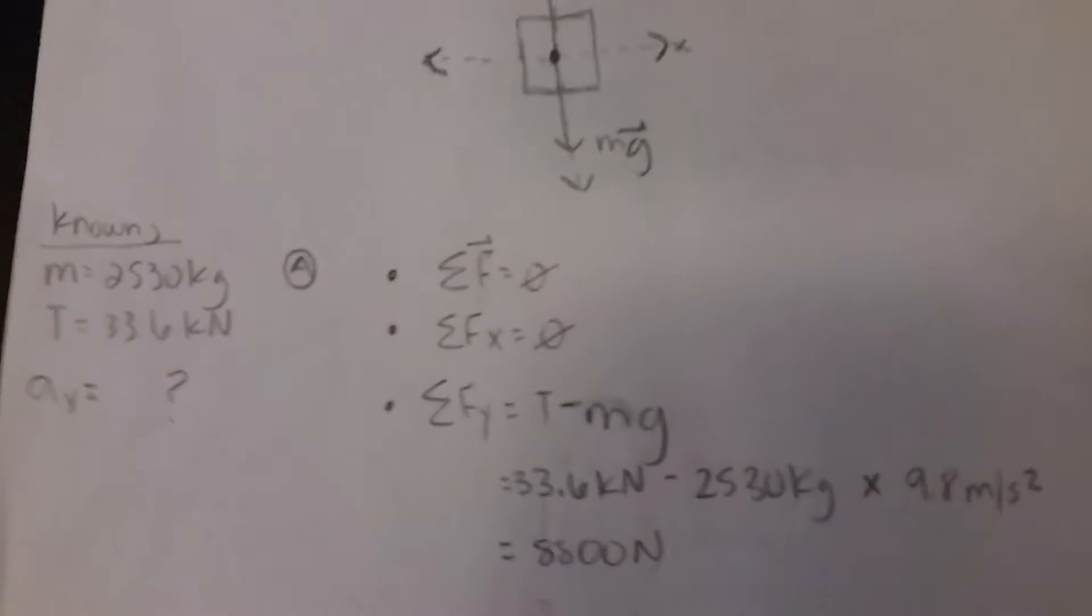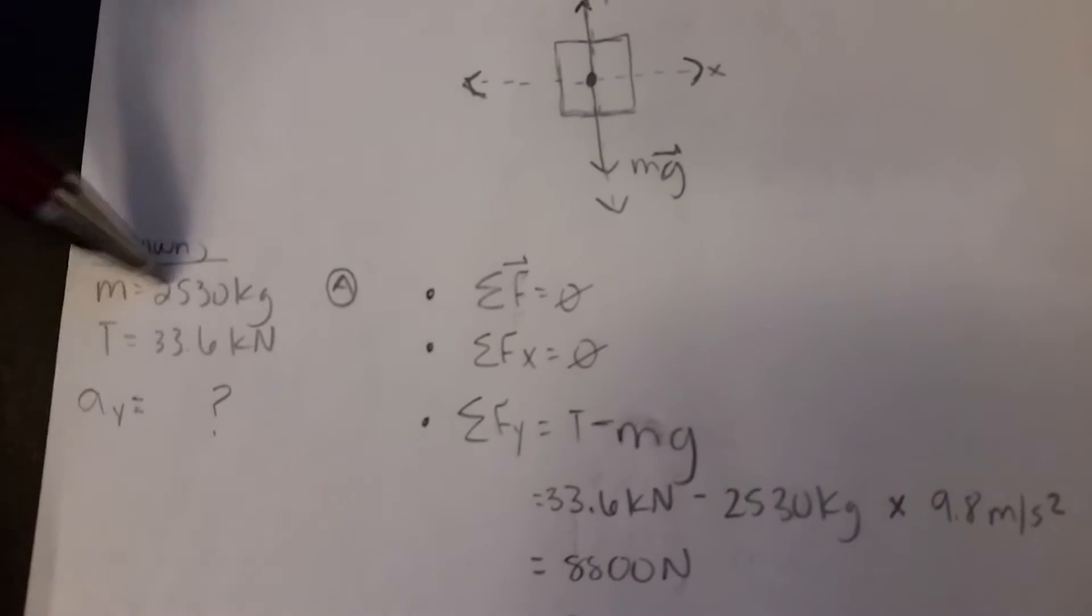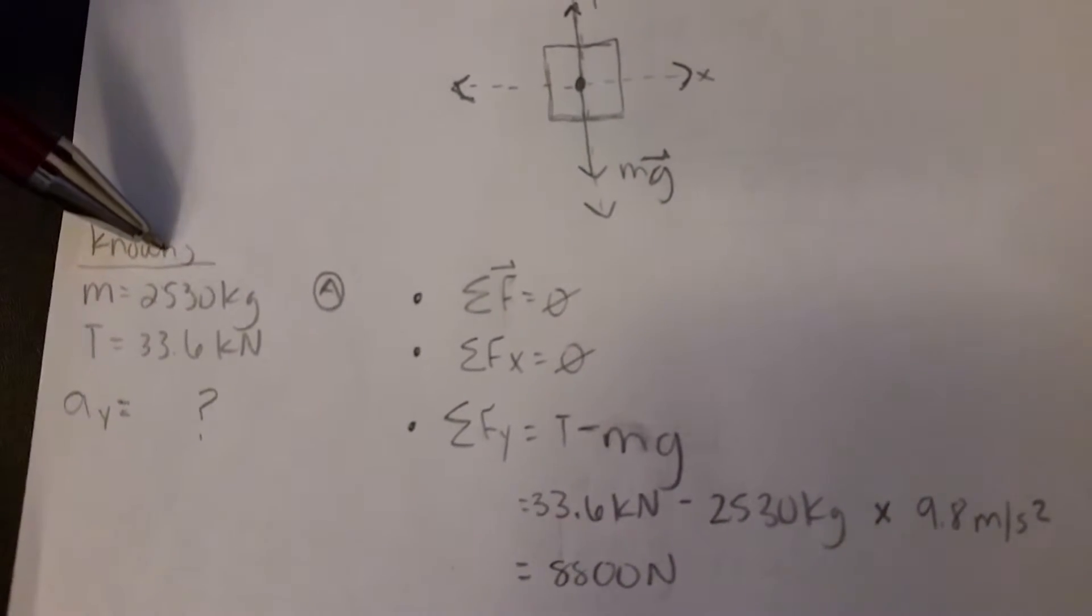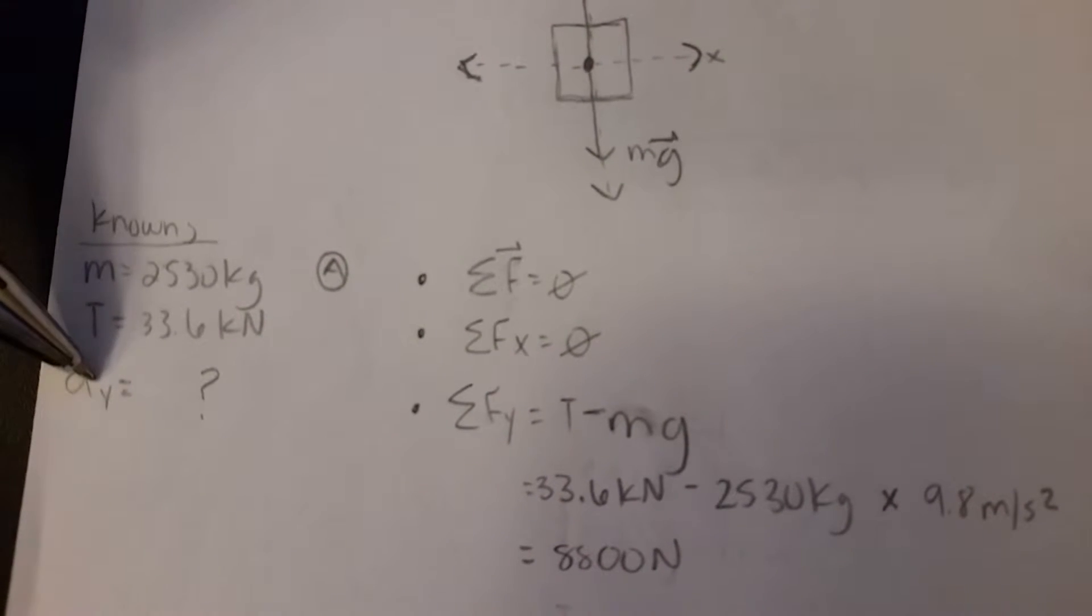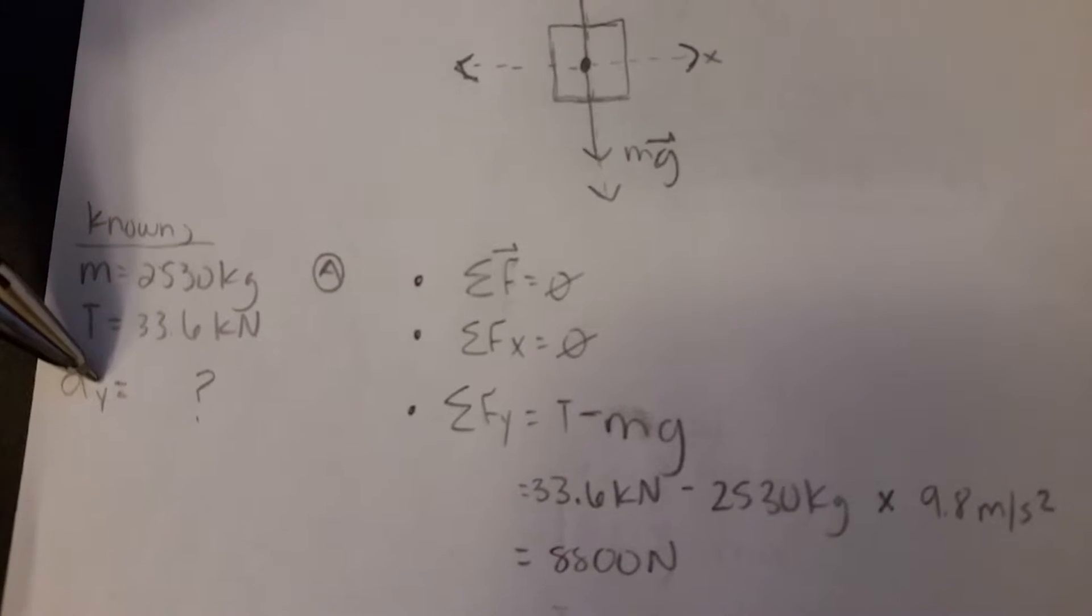So I have my known values right down here. Mass being 2,530 kilograms, tension being 33.6 kilonewtons, and we are looking for our acceleration in the y direction.